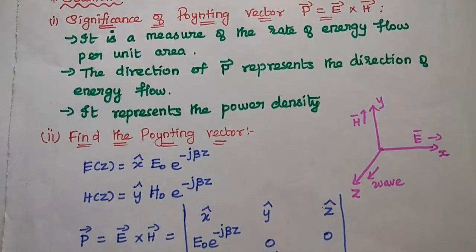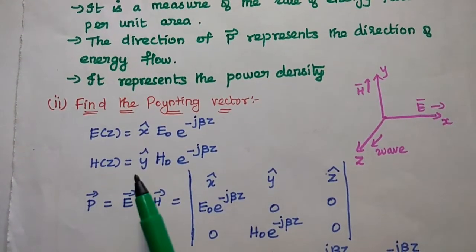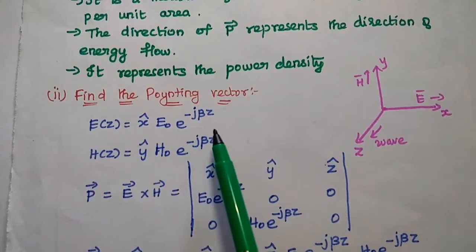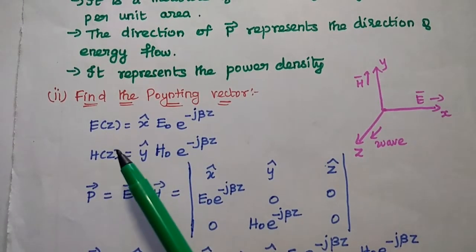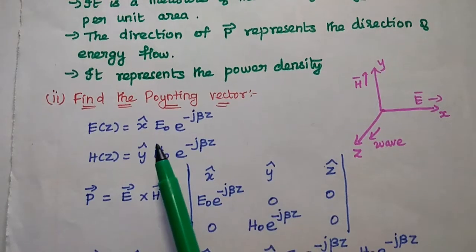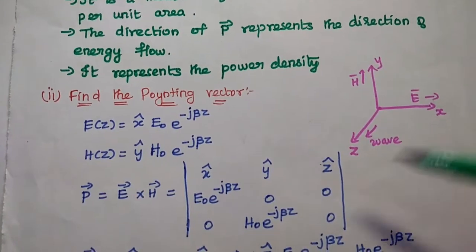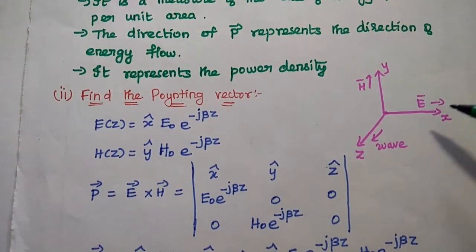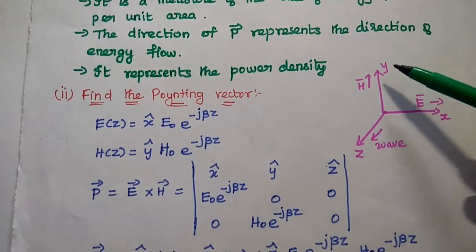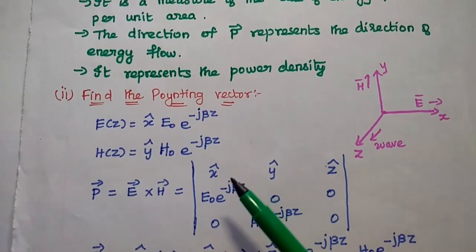Next, we are going to find out the Poynting vector for the given medium. They have given the electric field intensity E(z) = x̂ · E₀ · e^(−jβz). Since the wave is propagating in the z-direction and the electric field is in the x-direction, the magnetic field must be perpendicular — it is in the y-direction. So we can write H(z) = ŷ · H₀ · e^(−jβz).